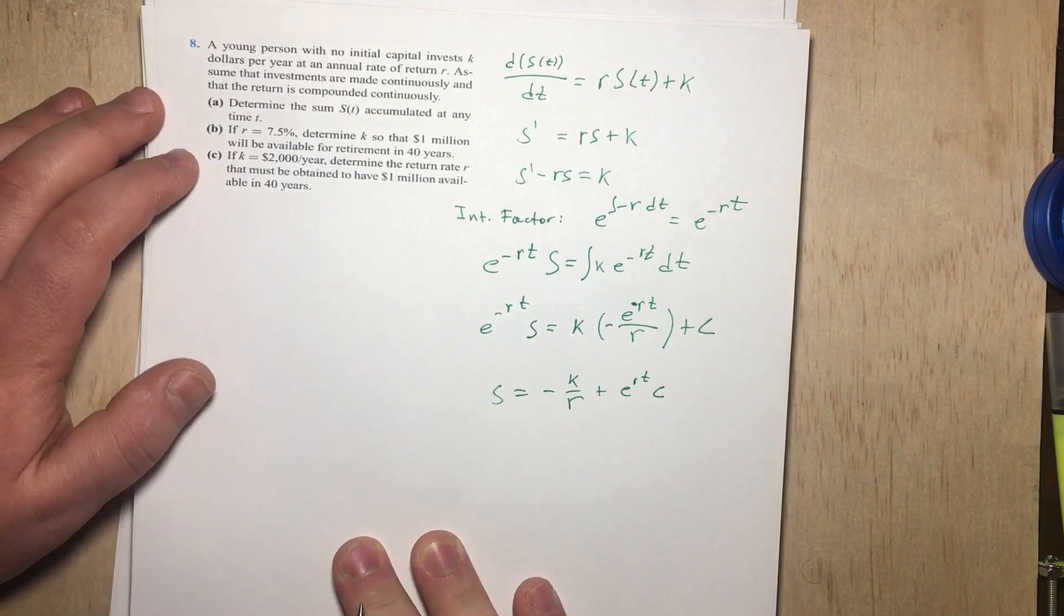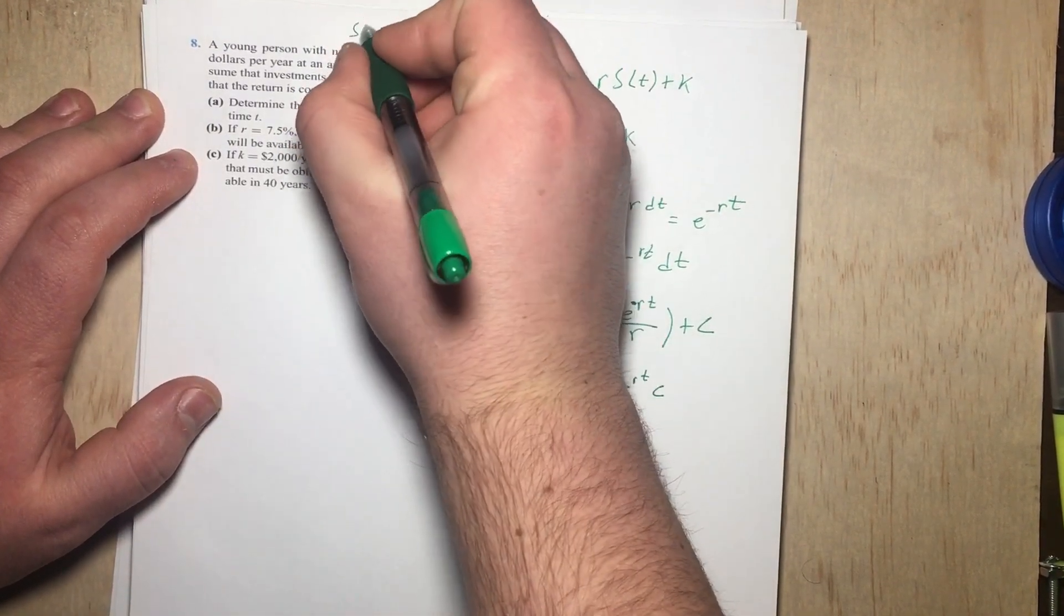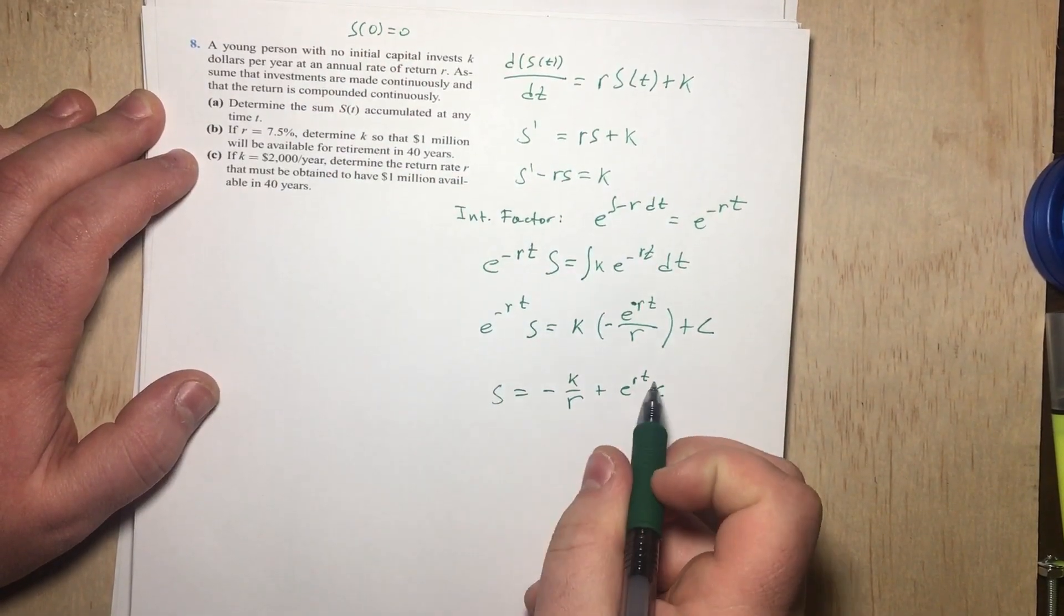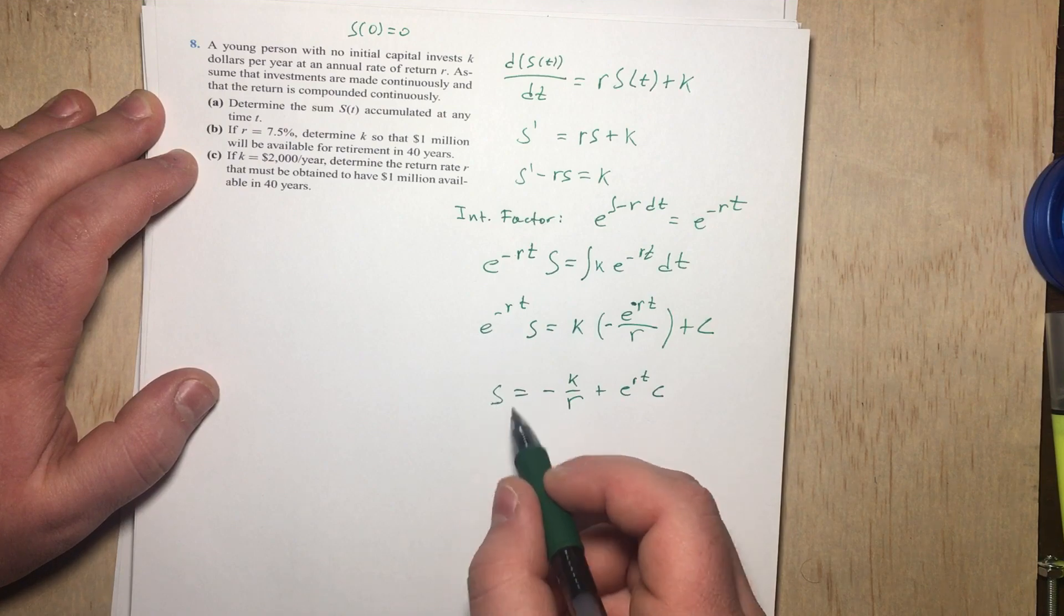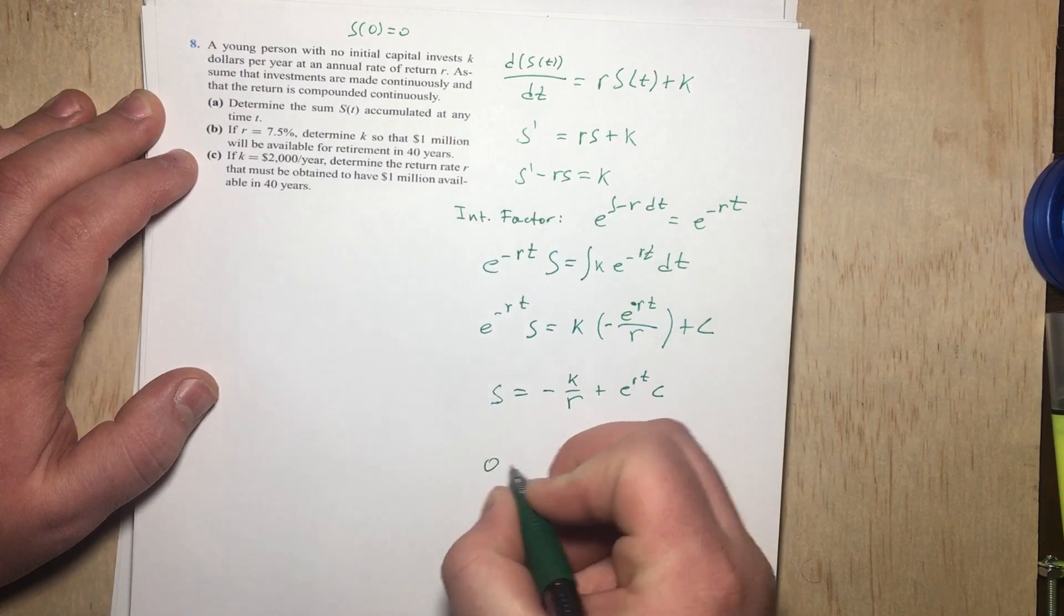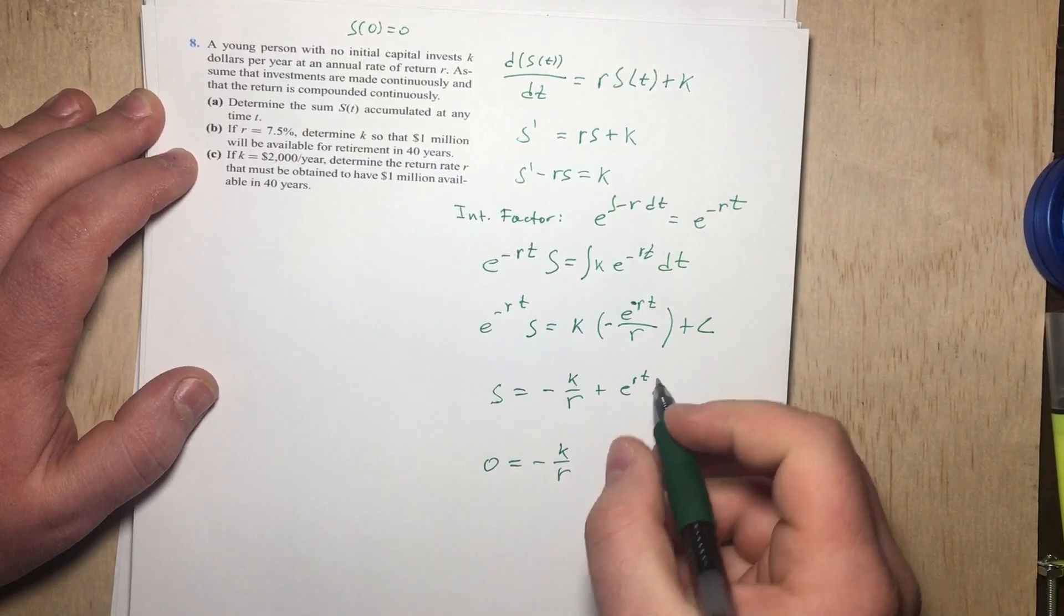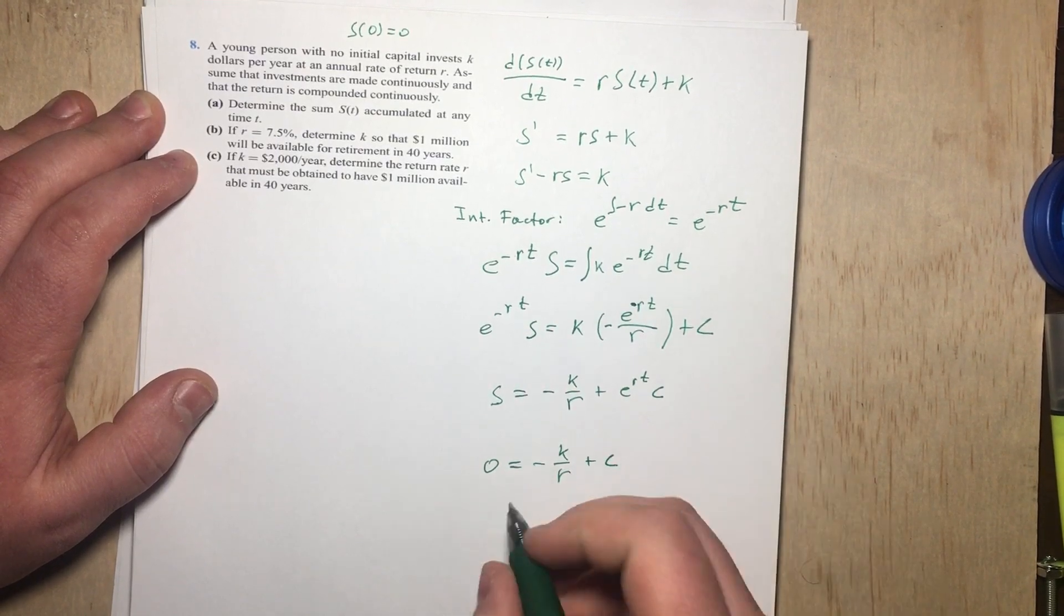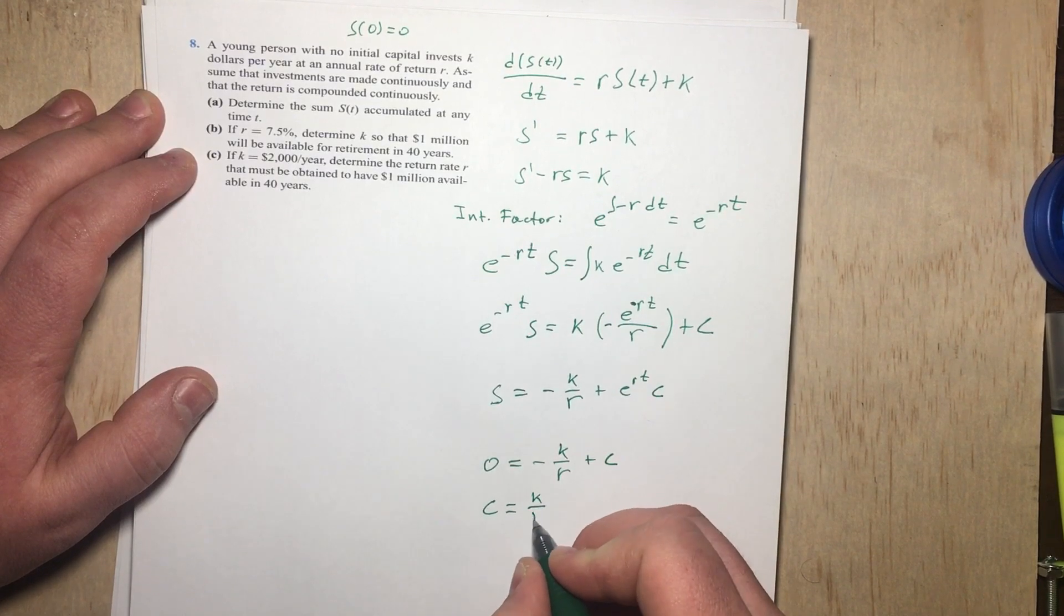Okay, so if we read the problem carefully, it says no initial capital. That means that S(0) is 0. So in other words, if you plug in 0 for time t, we're going to get a sum of 0, which is the initial sum stated in the problem. So 0 = -K/R, and then e^0 is just 1, so plus C, and C is going to be equal to K/R.